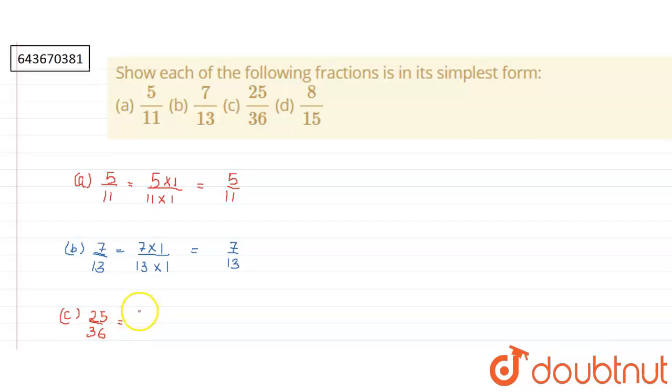Factors of 25 are 5 into 5 into 1. On the other hand, factors of 36 are 2 into 3 into 2 into 3 into 1.